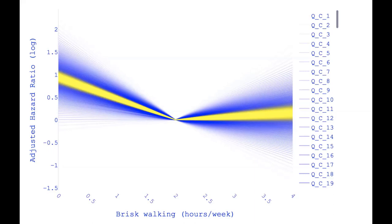Mathematically, the variances are a function of the horizontal axis — you multiply by the square root of the dose distance, which is why you get larger uncertainty toward the ends of the spectrum.